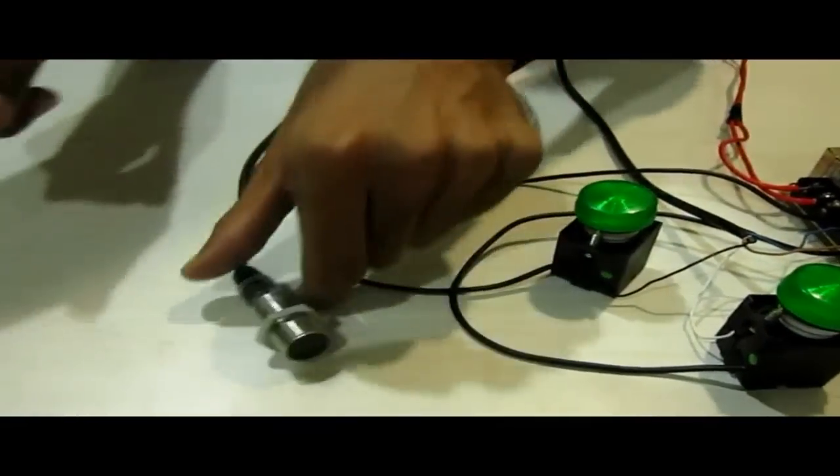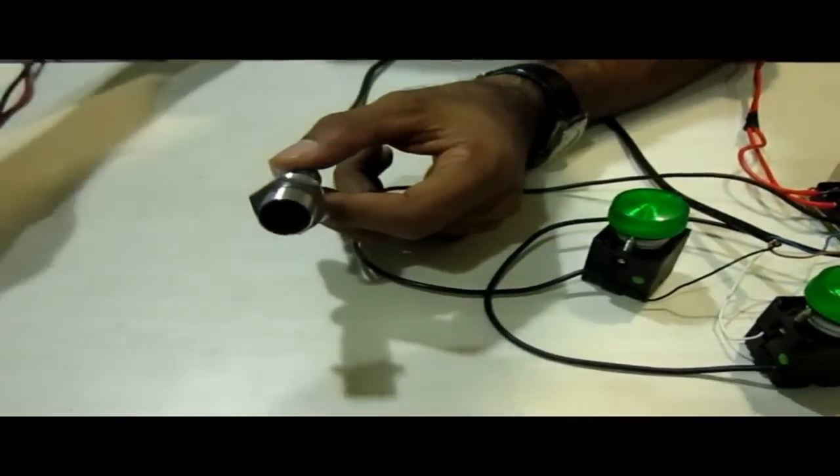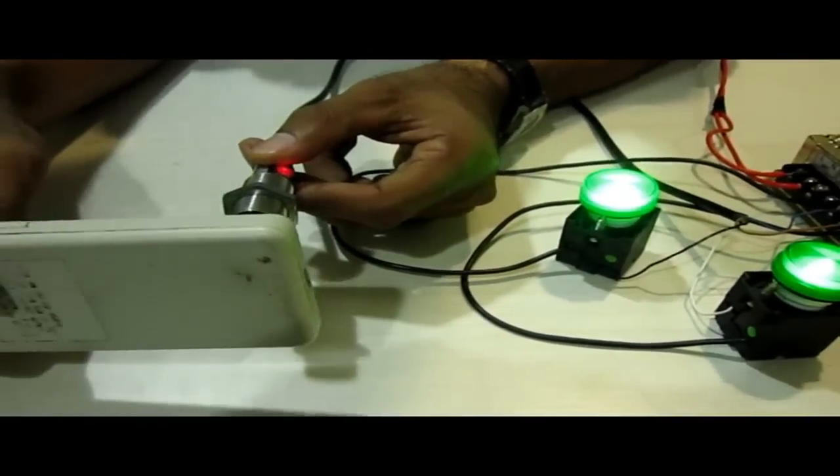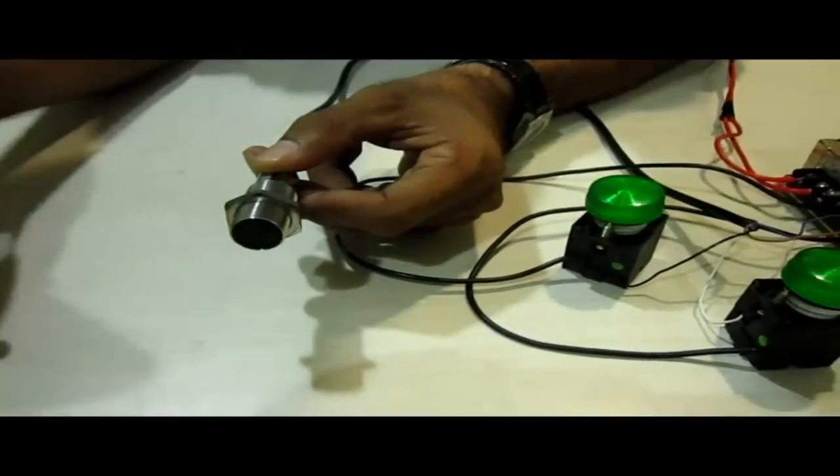Now when I place any object in front of the sensor you can see the indicators are on because it is detecting the presence of the object. Now what is the principle behind this?